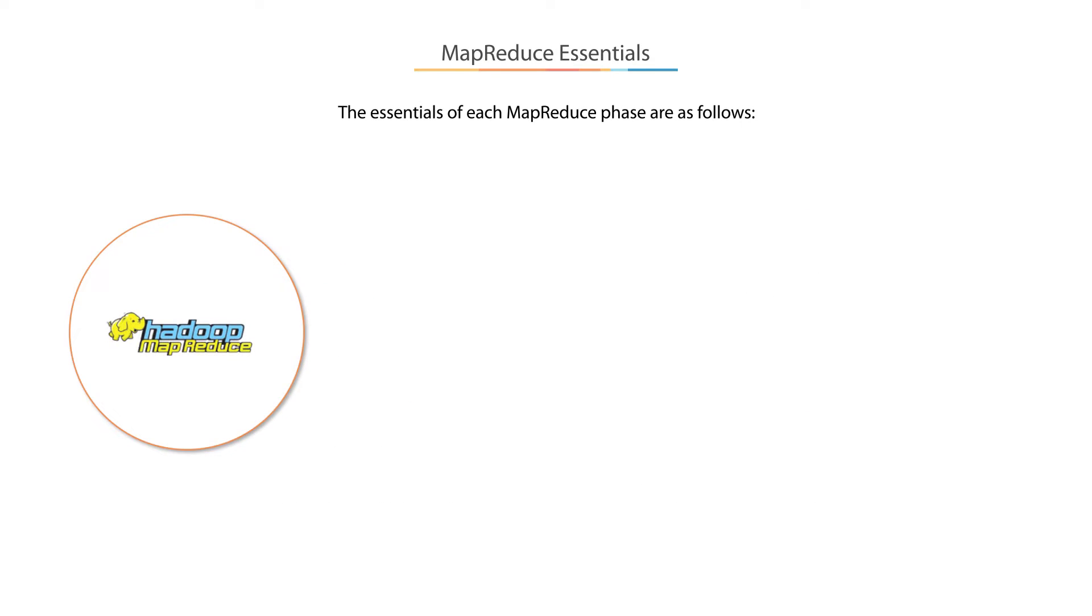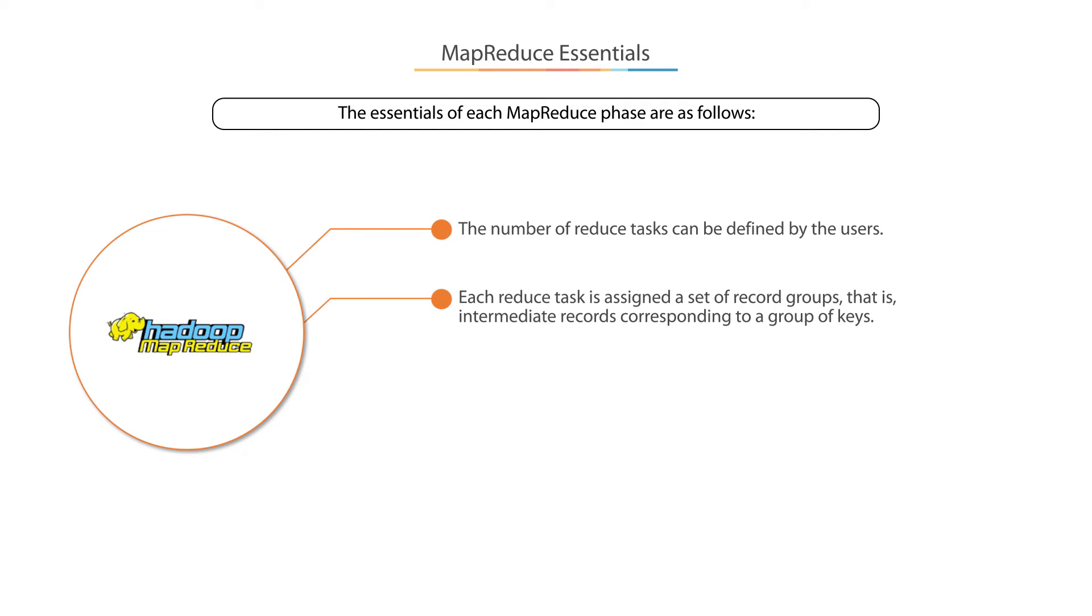The essentials of each MapReduce phase are as follows. First, the number of reduce tasks can be defined by the users. Second, each reduce task is assigned a set of record groups, that is, intermediate records corresponding to a group of keys.